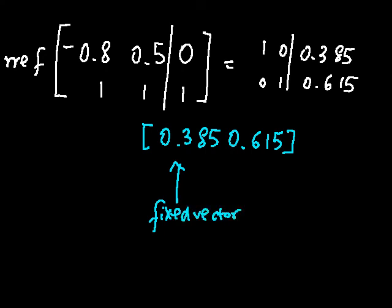And this just means that over time, with many multiplications by the transition matrix, this is what your initial distribution will approach.